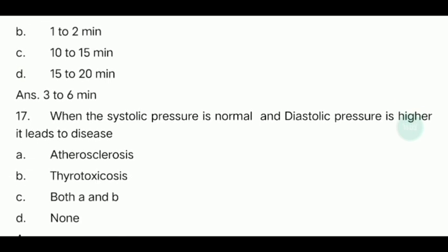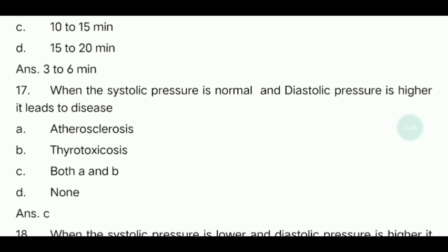Seventeenth question: When the systolic pressure is normal and the diastolic pressure is higher, it leads to disease. Blood pressure is recorded as systolic over diastolic — for example 120/80. The options are atherosclerosis, thyrotoxicosis, both A and B, or none. The answer is both A and B — atherosclerosis and thyrotoxicosis.